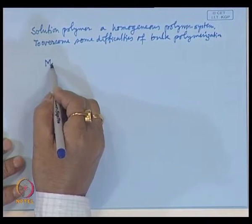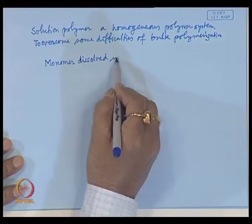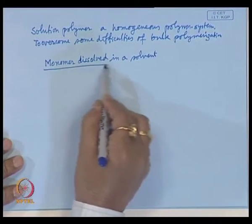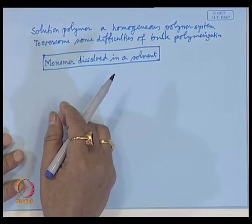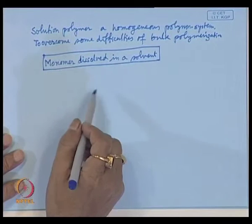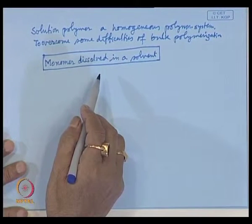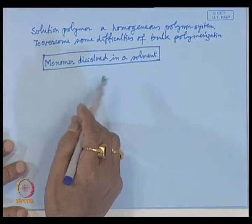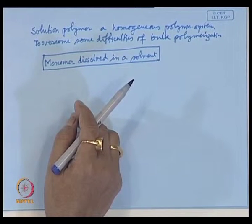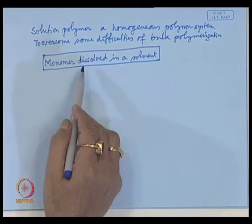In solution polymerization, the monomer - which may be a solid or a liquid - is dissolved in a suitable solvent. Here also the considerations of condensation and addition polymerization principles come into play. In the case of condensation polymerization, normally solution polymerization technique is not followed because condensation polymerization needs higher temperatures, with melting points higher than those of addition chain polymerization. So in the majority of cases, solution polymerization is followed for addition chain polymers.